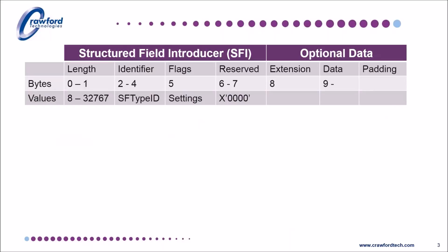The structured field introducer comprises eight bytes. The length of the field, including the first byte, is capped at 32,767 bytes — it's a two-byte integer.